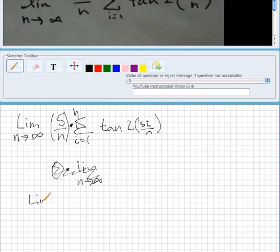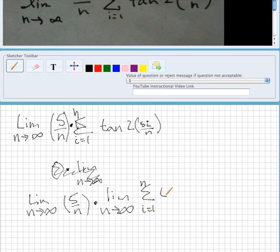The limit as n approaches infinity of 5 over n, times the limit as n goes to infinity of the sum from i equals 1 to n of tan²(5i/n).